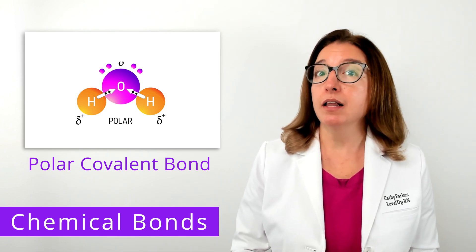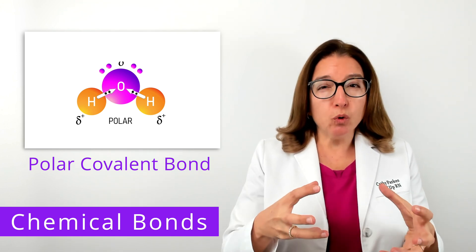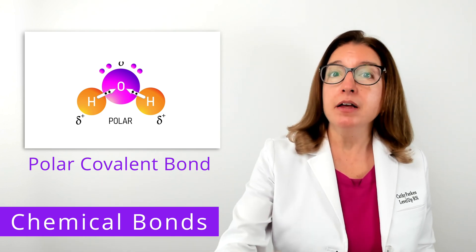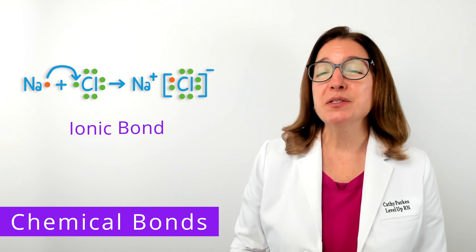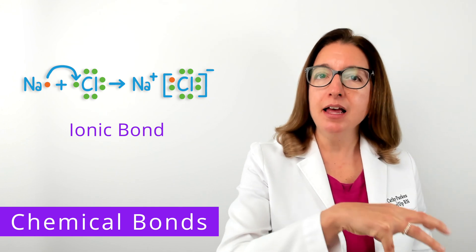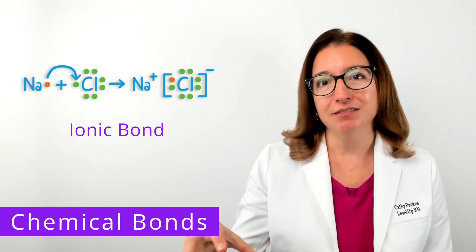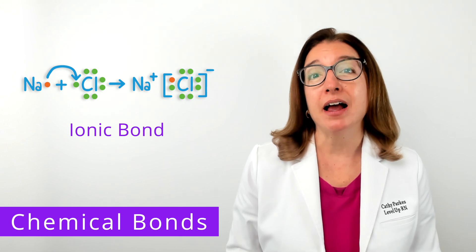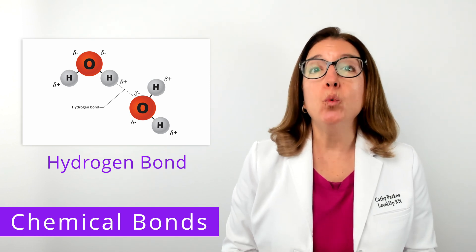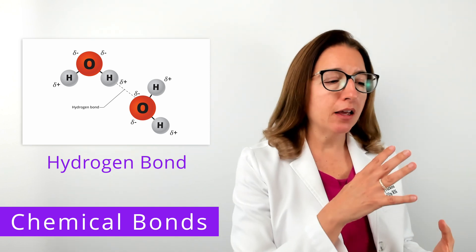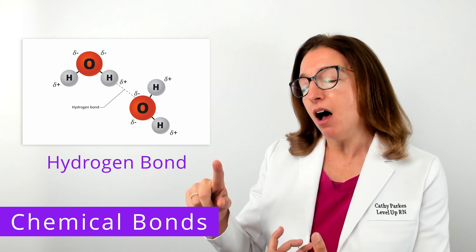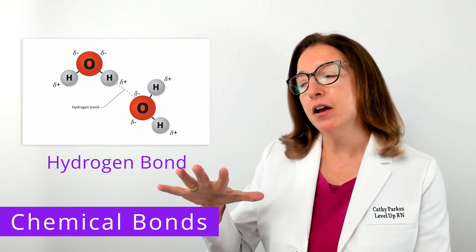Because oxygen is more electronegative, electrons are going to be pulled closer to the oxygen atom, giving it a slight negative charge, whereas the hydrogen atom is going to have a slight positive charge. Next, we have an ionic bond, which results from the attraction between a cation (a positive ion) and an anion (a negative ion). The most common and well-known example of an ionic bond is sodium chloride, or salt. Lastly, we have a hydrogen bond, which is a weak attractive force between a weakly positive hydrogen atom on one molecule and a weakly negative oxygen, nitrogen, or fluorine atom on another molecule.